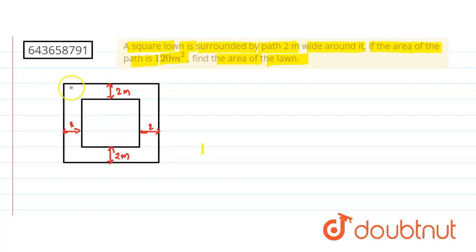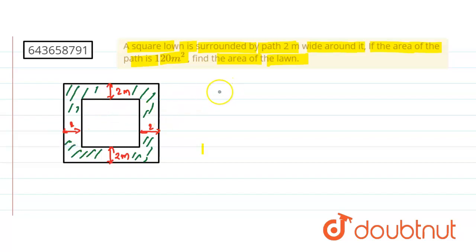The area of this path is given in the example. The area of the path is 120 square meters.